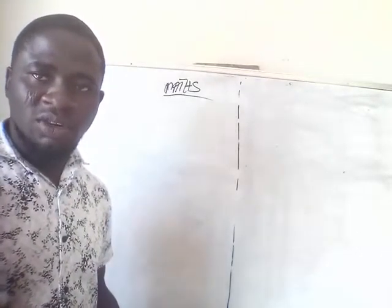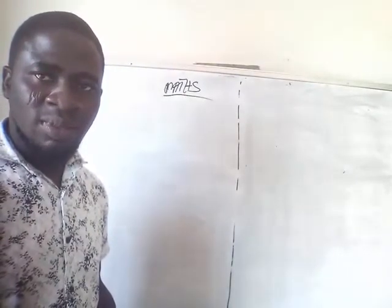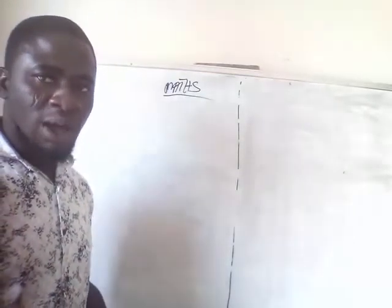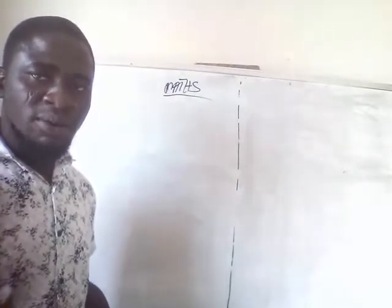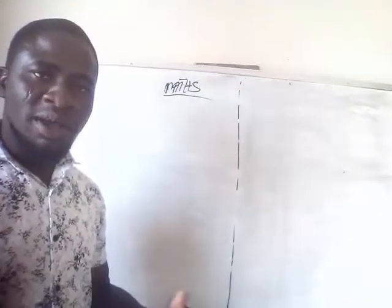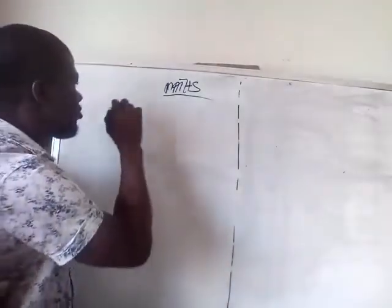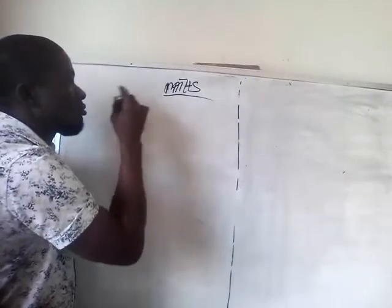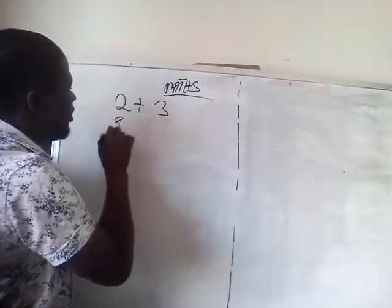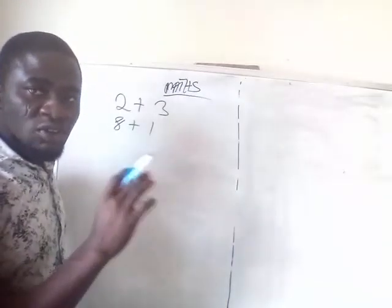Numerical expression — there is no variable in it. It is just constants, just numerals. For example, what you will be seeing in a numerical expression is something like two plus three, or eight plus one. They are just numerals.